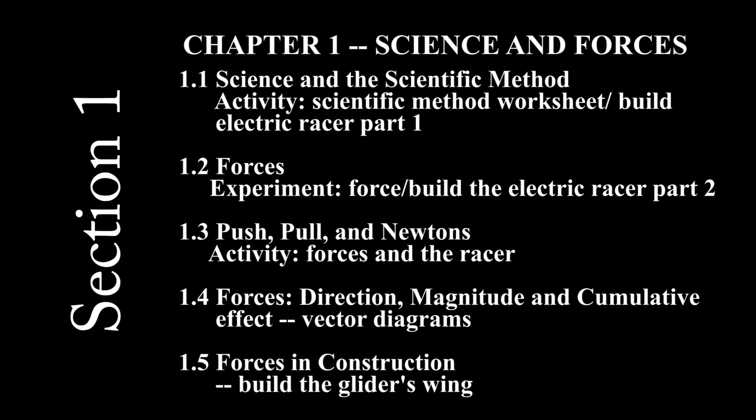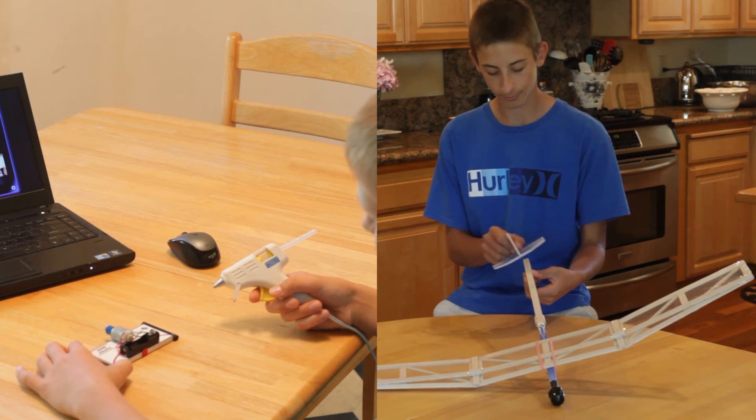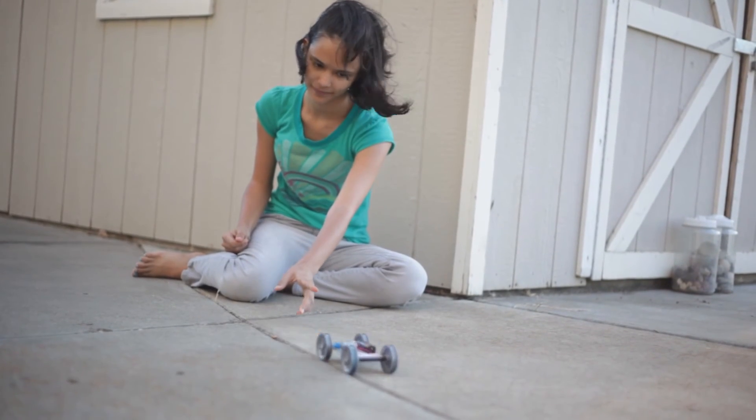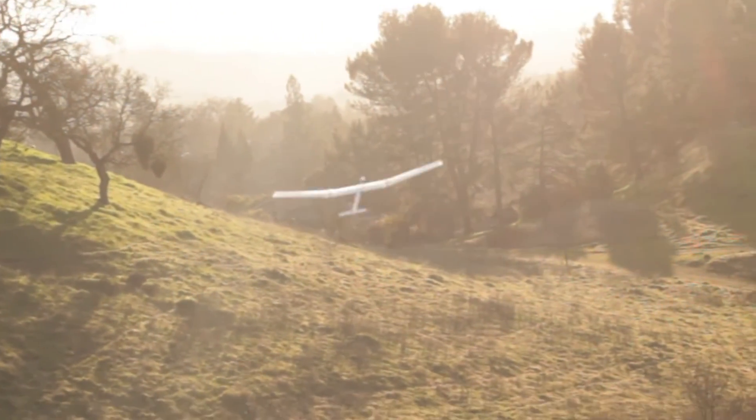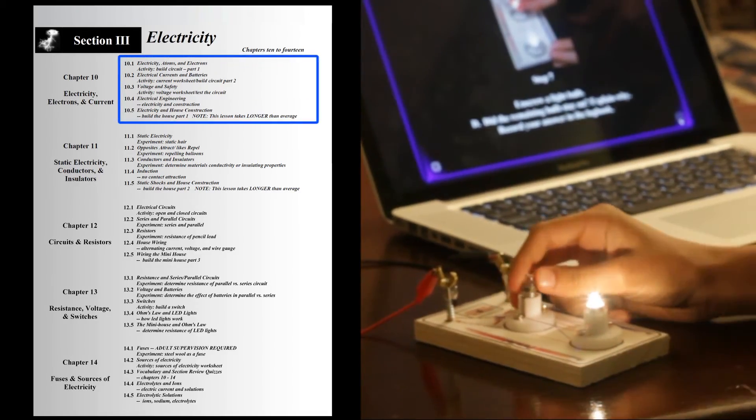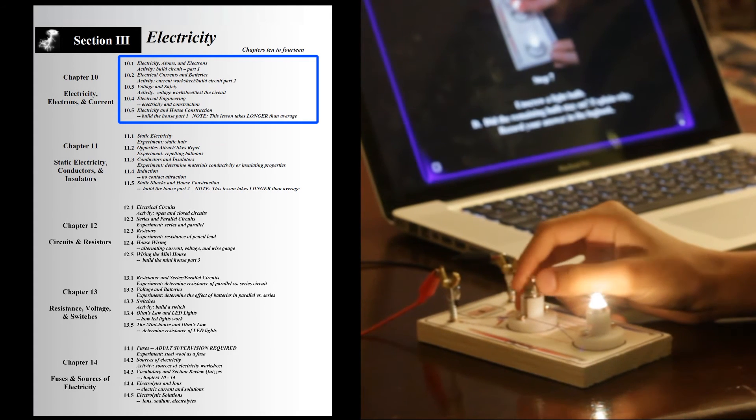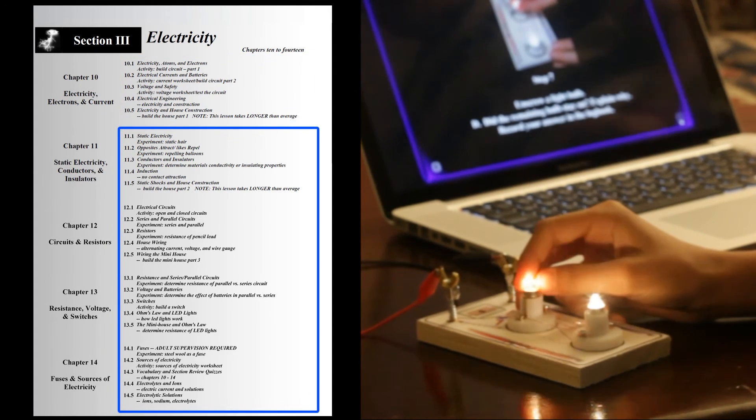In the first chapter of each section, the students will have their regular lessons, but in these activities they will build their projects, in this case the car and glider. Then they will use the car and glider in most of the experiments following these lessons. When they get to a new section, they will build a new project, in this case the circuit, and use it in the experiments following these lessons.